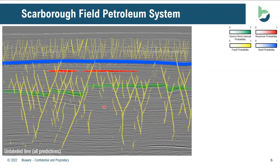In this case, we've interpreted the different faults — we see the predictions for those in yellow. We also see the source rock interval highlighted in green, the red is the reservoir, and then in blue is the regional top seal for the Scarborough gas field offshore Australia. We're able to quickly characterize the petroleum system for this area and better understand the different relationships between the stratigraphy as well as the structure, and how that plays into our area and what new opportunities we can identify.